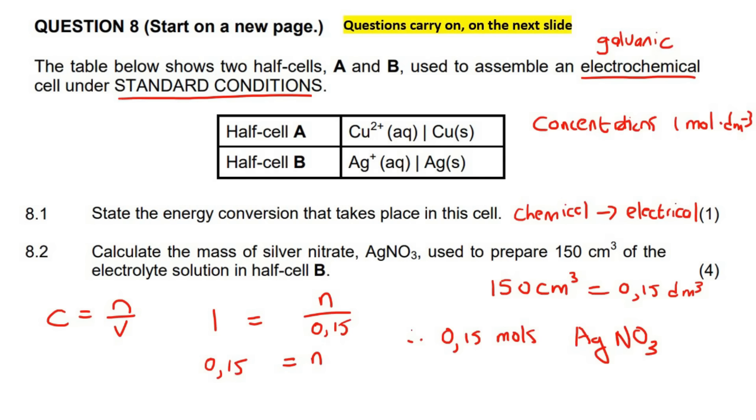So now what we can go and do is we can go use the formula N equals to M over capital M, and now here's where you would need your periodic table. So you could go find the mass of silver, nitrogen, and oxygen. So if you look at your periodic table, we'd know that silver is 108, nitrogen is 14, and then oxygen would be 16. So if we had to say 0.15, and then the mass we don't know, and then for the molar mass,